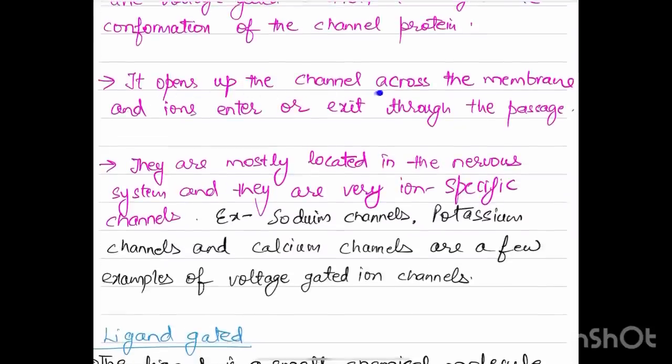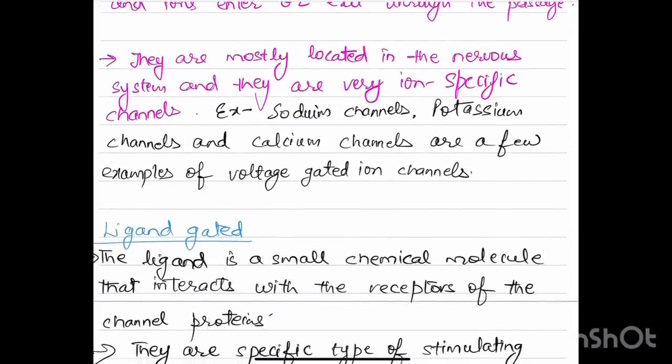The ions enter or exit through the passage. Mostly they are located in neurons in the nervous system and they are very ion-specific channels. For example, sodium channels, potassium channels, calcium channels. These are few examples of voltage-gated ion channels.